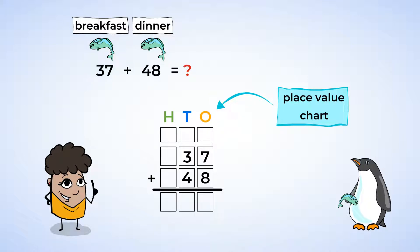Right now, these numbers are only 2 digits, but as the numbers get bigger, it is really helpful to stay organized and neat with your work. In the place value chart, you can see that 37 has 3 tens and 7 ones. And you can see that 48 has 4 tens and 8 ones.